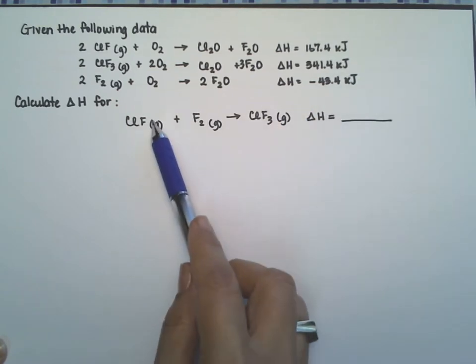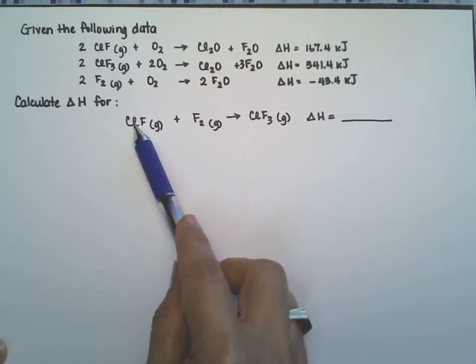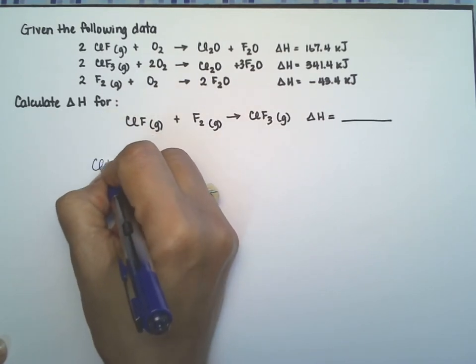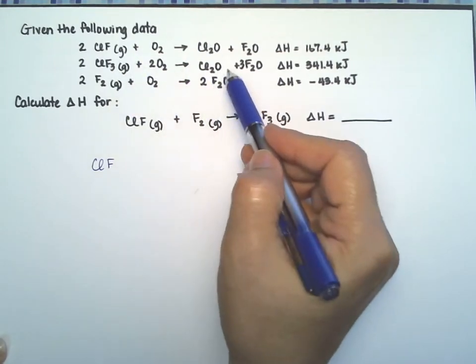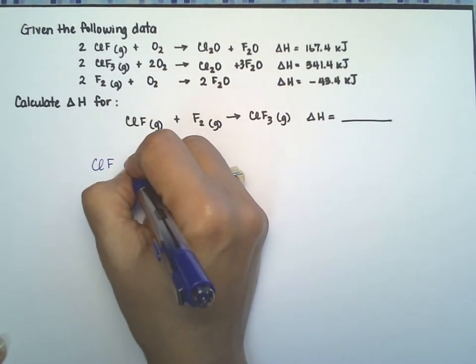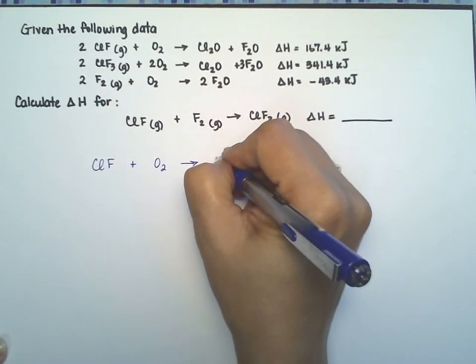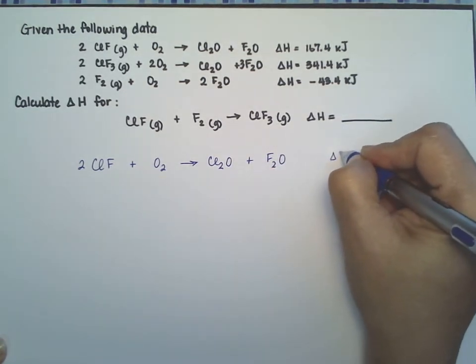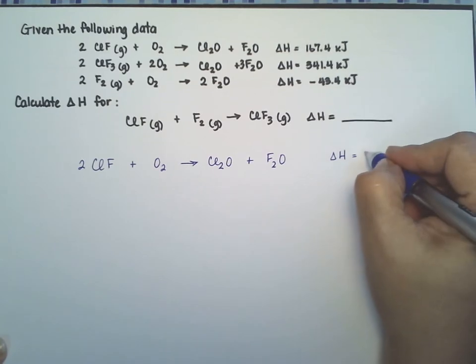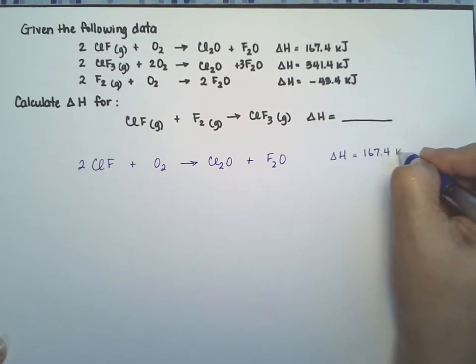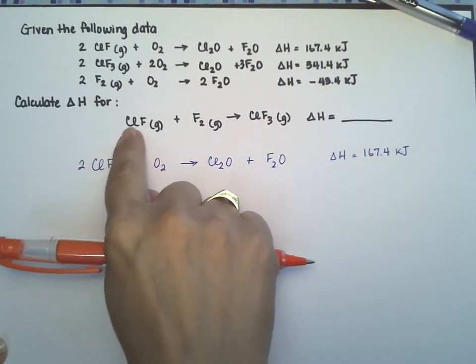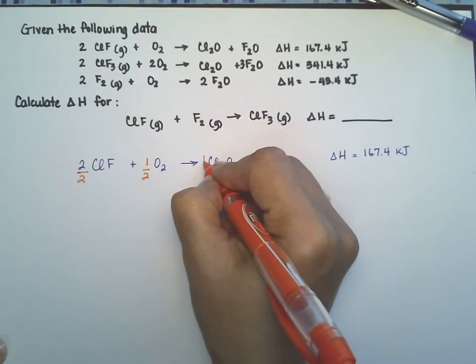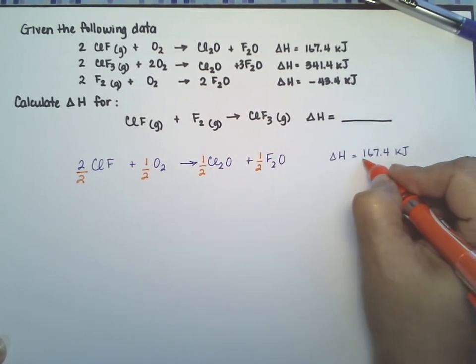Let's start with the equation that has CLF as a reagent. We have it right here, so I'm going to copy it down here: CLF. I'm going to ignore the states because it's faster to write without them. I'm going to put the Delta H here: 167.4 kilojoules. The equation they give us only wants one of these, but I have two, so I'm going to divide everything by two, including the Delta H.